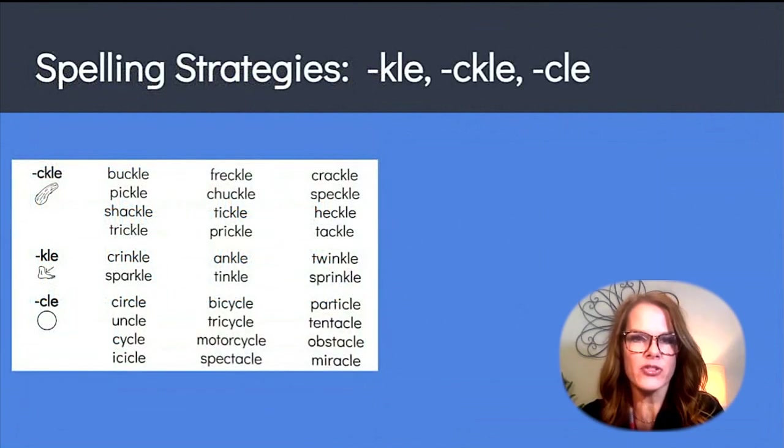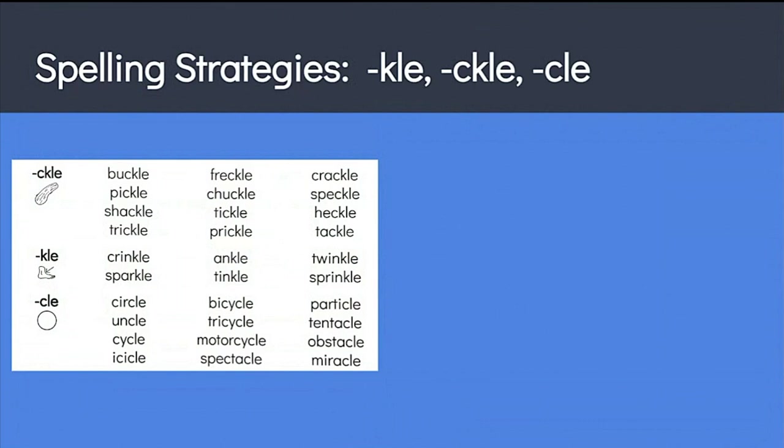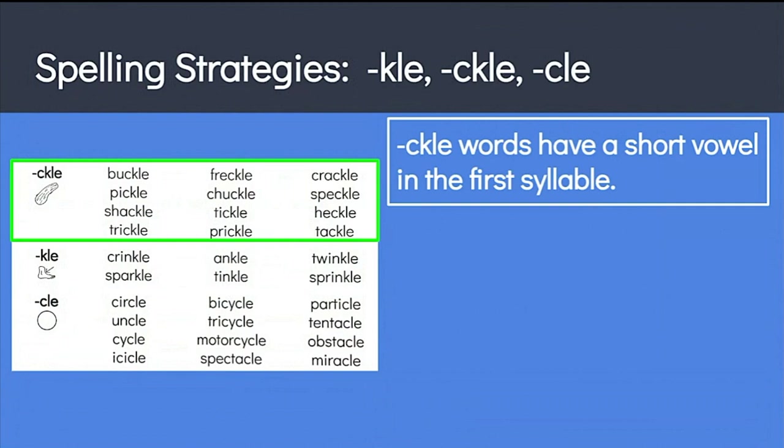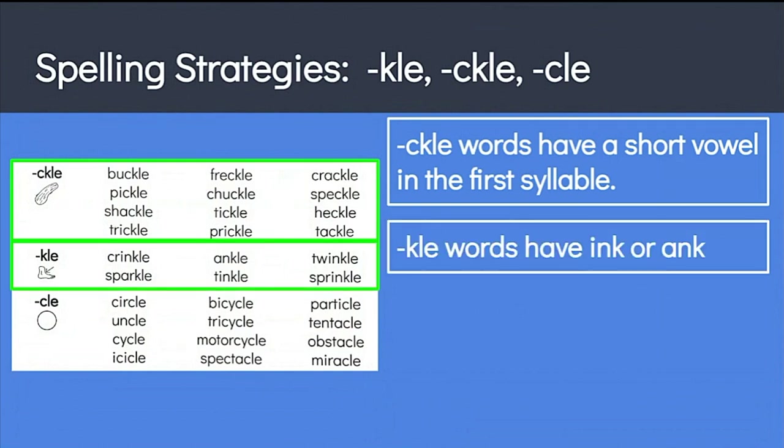Now let's talk about spelling strategies. If you take a look at the words on the page, you may notice that there are patterns in the words with different spellings. And these are helpful to note for spelling purposes. What pattern do you see or rather hear in the words with CKLE? Buckle, pickle, shackle, trickle. Have you noticed all these words have a short vowel in the first syllable? How about the words with KLE? These words all either have INK or ANK chunks in them, with the exception of the word sparkle.